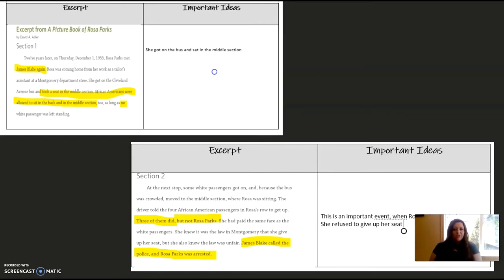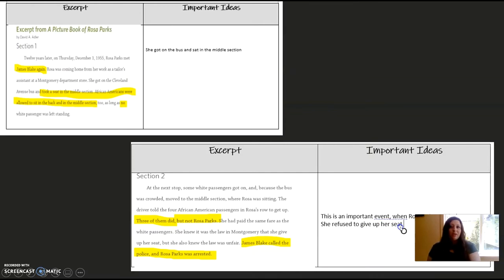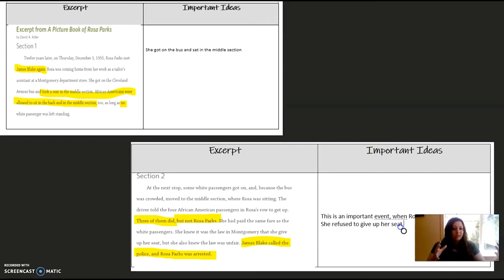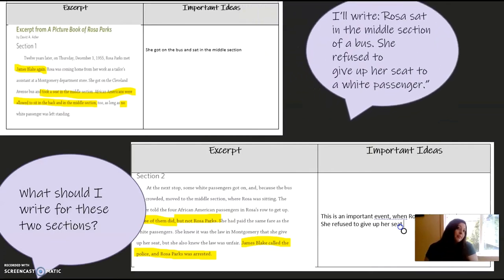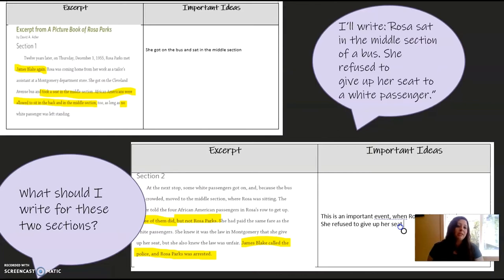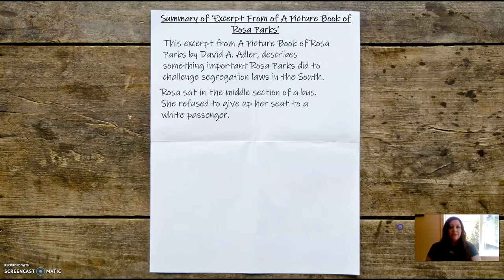I'm not going to reread the entire section two excerpt, but this was an important event: when Rosa gets arrested, she refused to give up her seat. I want to take those two important ideas and combine them into one to make my summary concise. Concise means you're clear and you don't need to use a ton of words — it's clear and often short, making each sentence really impactful with no fluff. So let's combine those: 'Rosa sat in the middle section of a bus. She refused to give up her seat to a white passenger.' Let's add that into our summary. Pause now if you need to catch up — if what you write is a little different, that's okay.